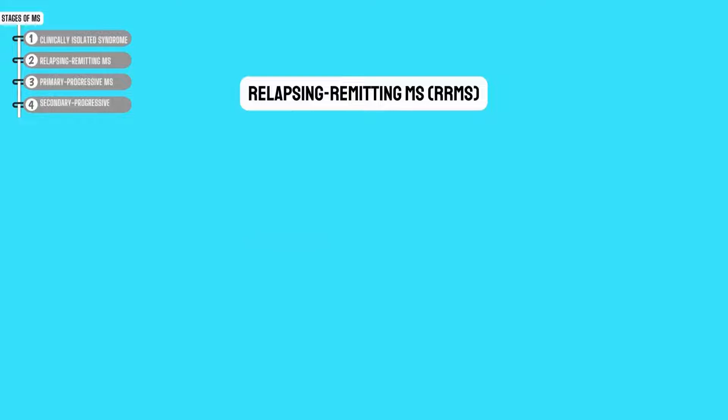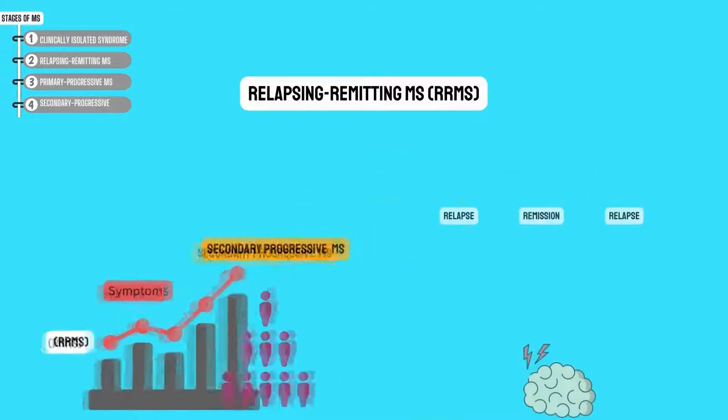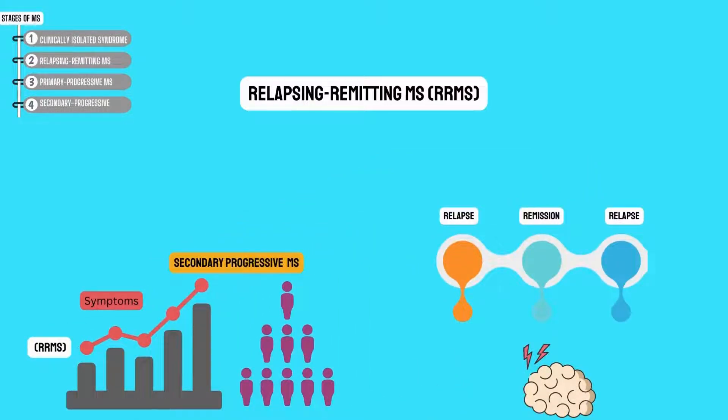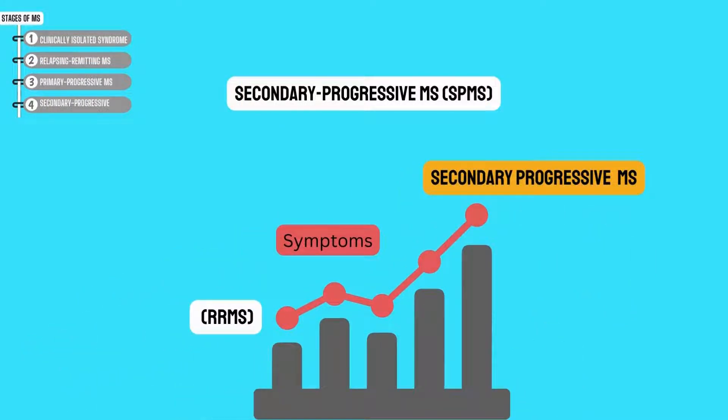Next, the relapsing-remitting type of MS. It generally follows a predictable pattern with periods in which symptoms worsen and then improve. Eventually, it may progress to secondary progressive MS. According to the National MS Society, around 85% of people with multiple sclerosis receive an initial diagnosis of RRMS. People with relapsing-remitting type have flare-ups or relapses of MS. Between the relapses, they have periods of remission. Over a few decades, the course of the disease is likely to change and become more complex. RRMS can progress into a more aggressive form of the disease.